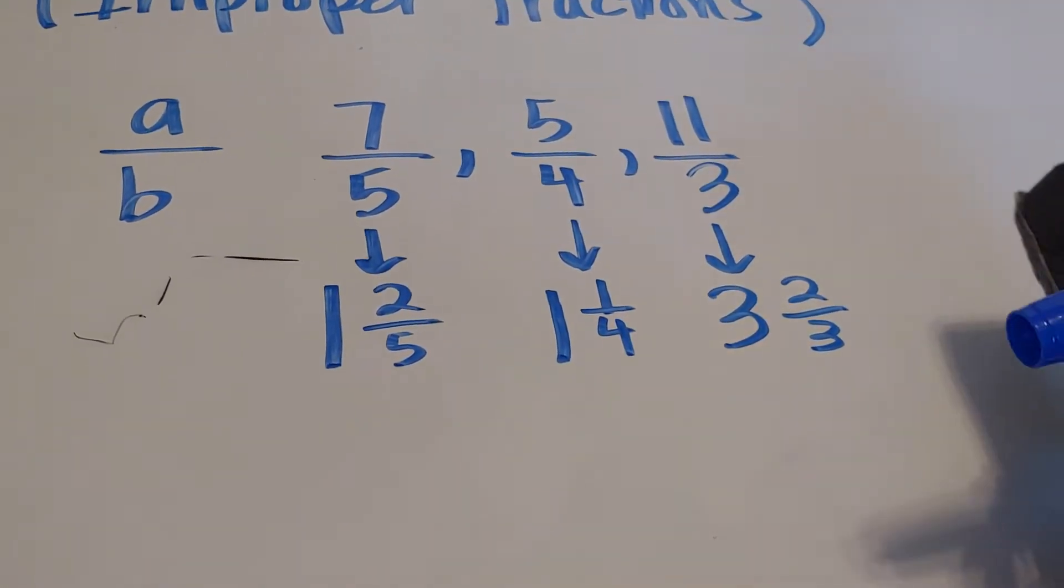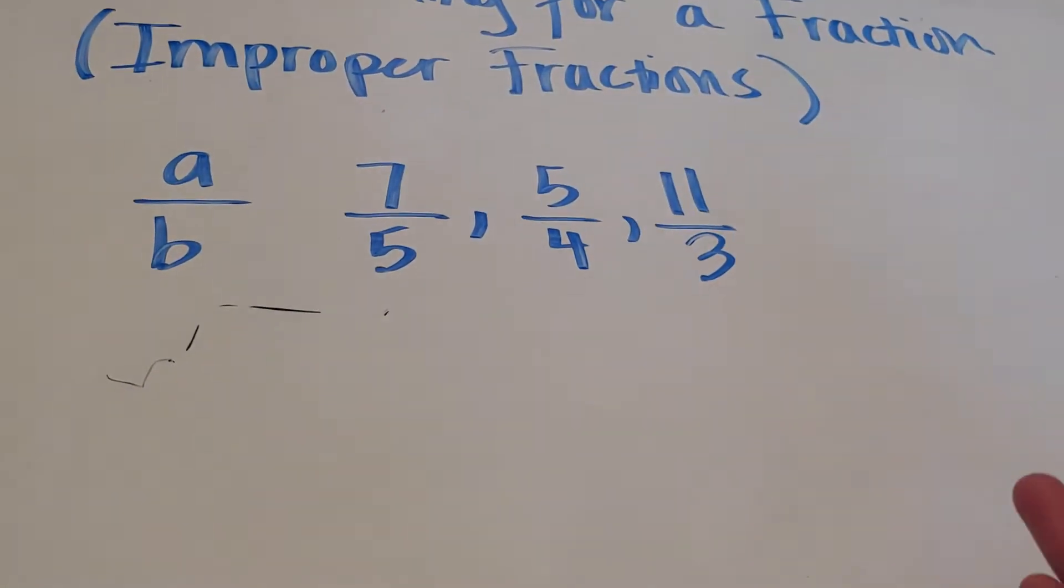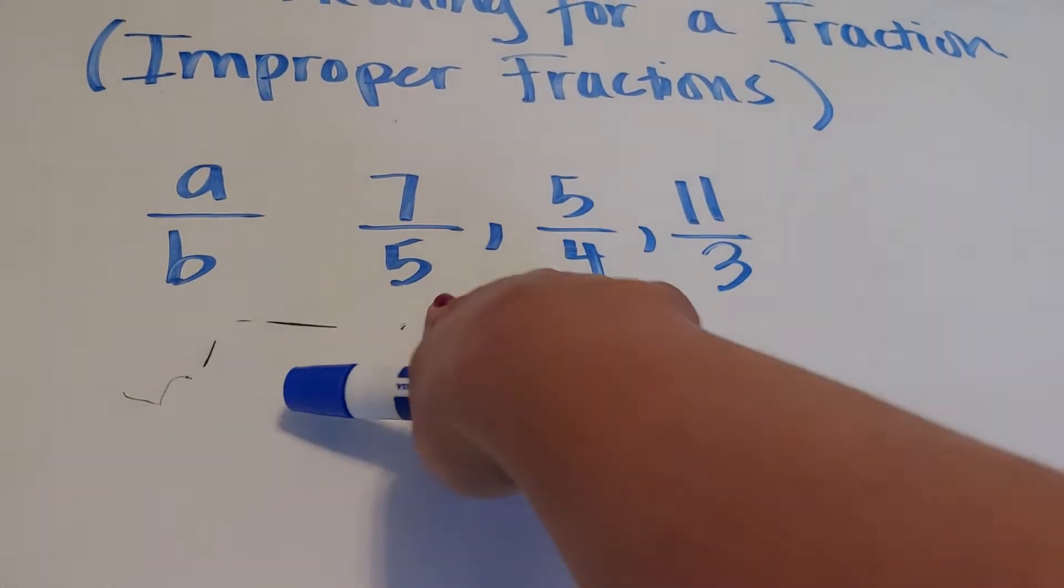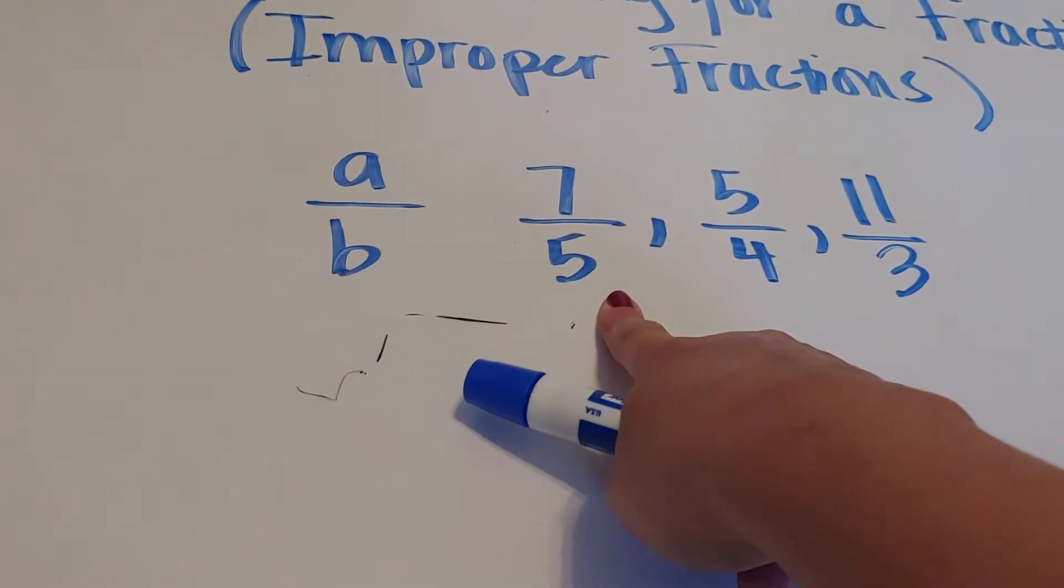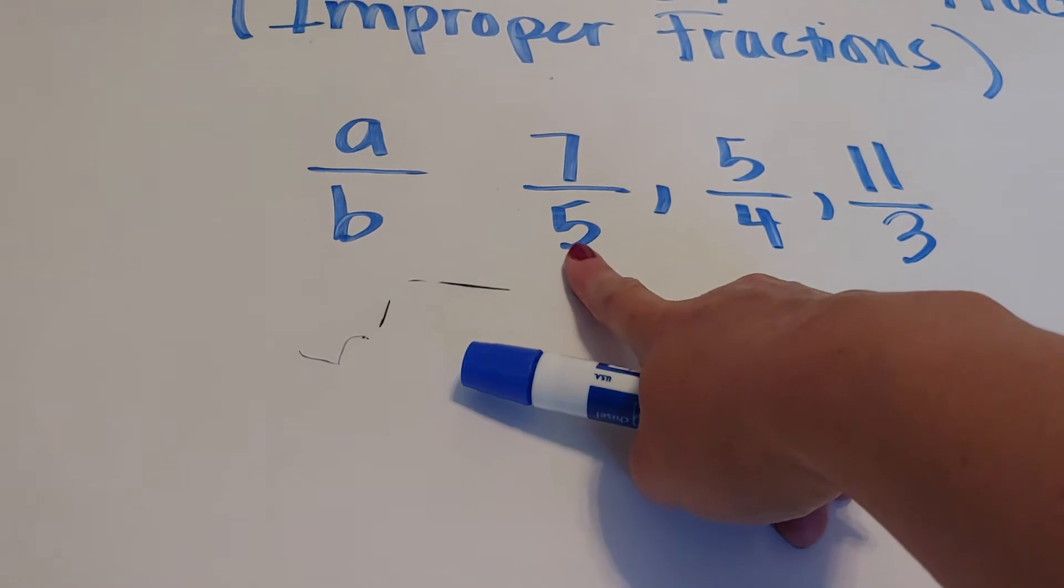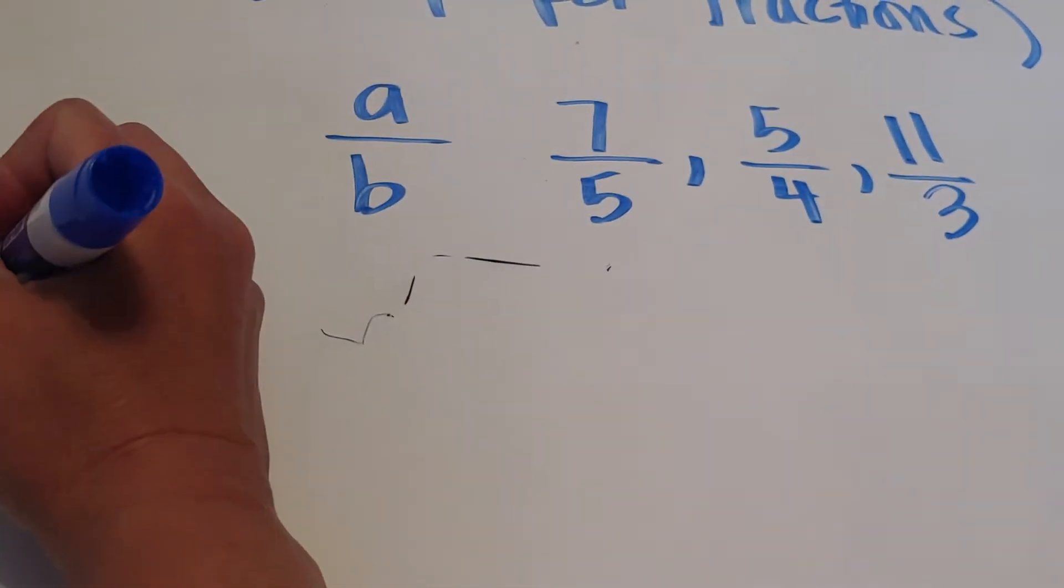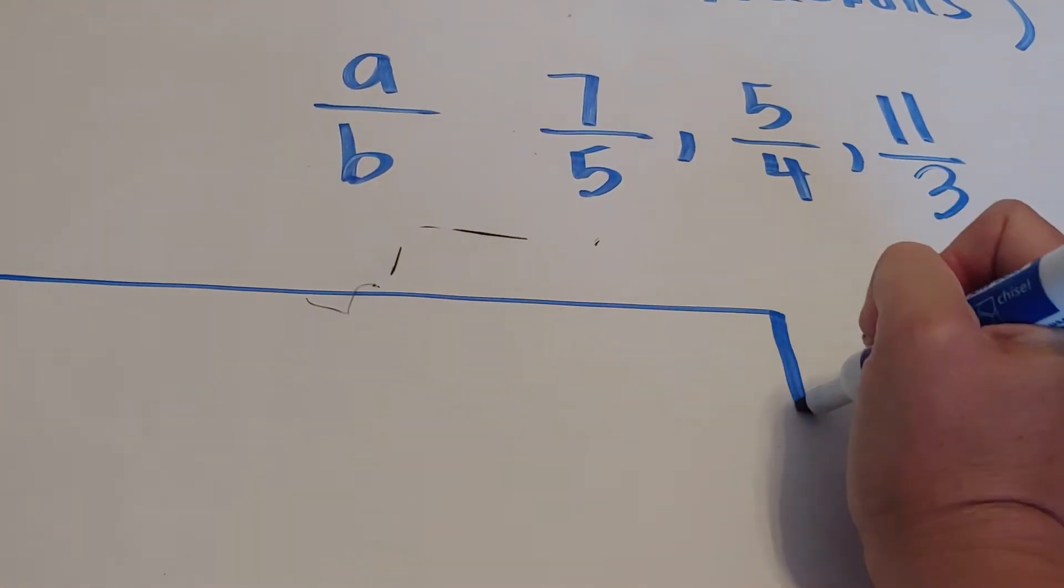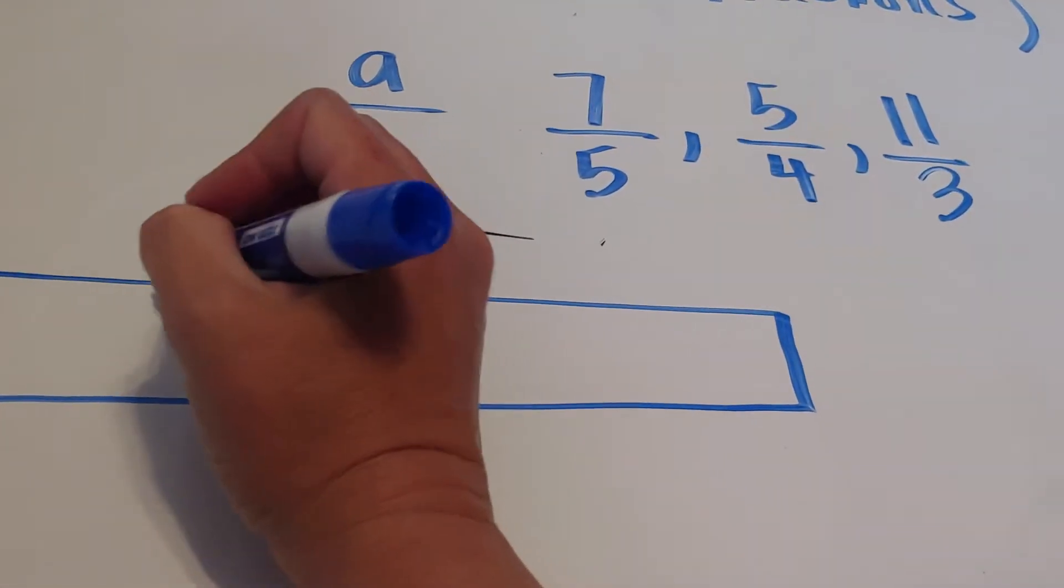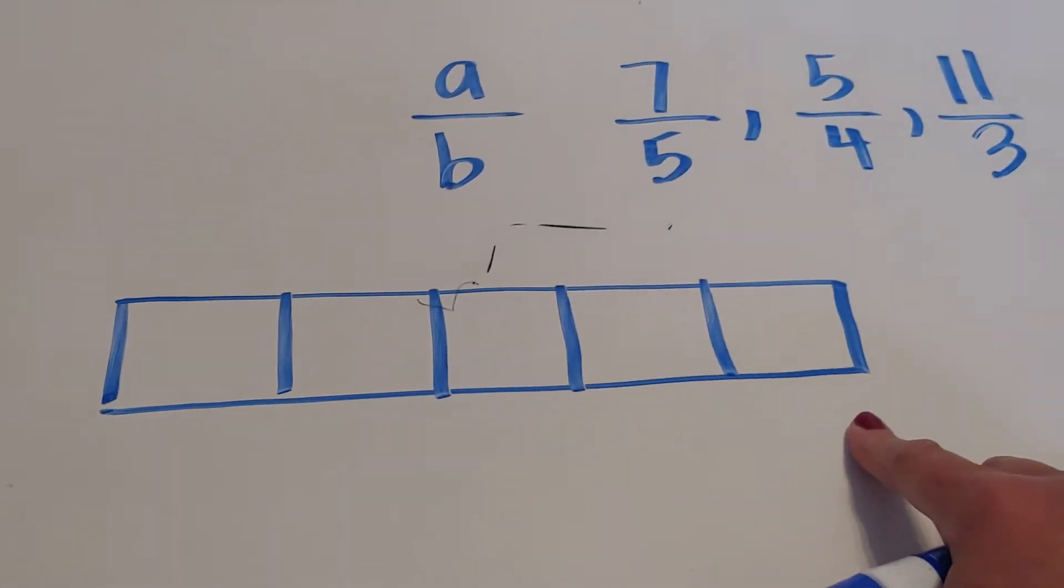So let's say, for example, I want to do, and it doesn't really matter which of these shapes I choose, or these numbers I choose. Let's say I started with 7 fifths. So I need to have a shape that I cut into 5 equal parts. I'm going to go ahead and go with a tape diagram. So here's my 1, and I'm going to cut it into 5 equal parts, or as close to equal as I can get it.